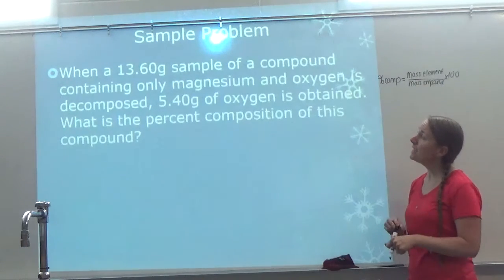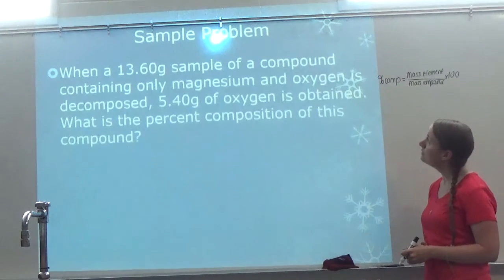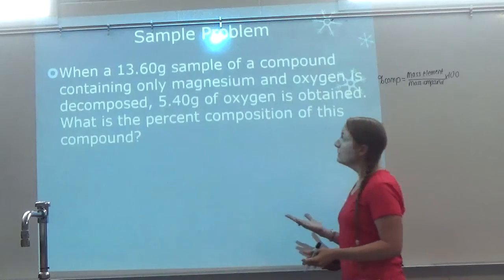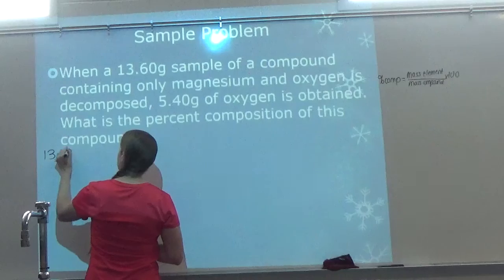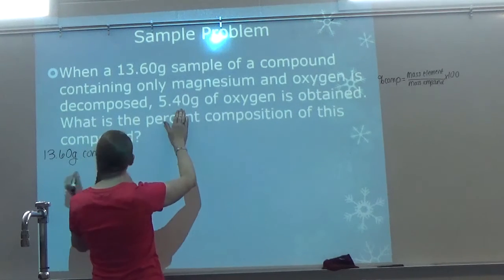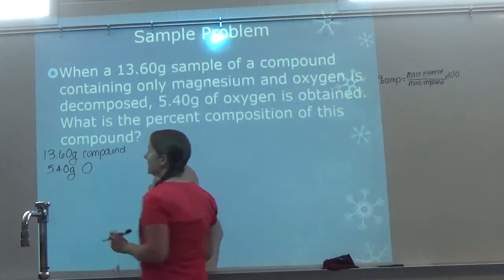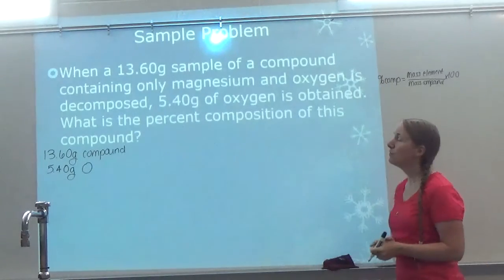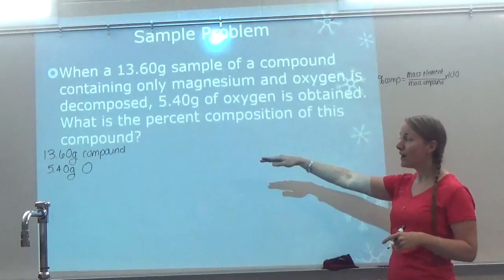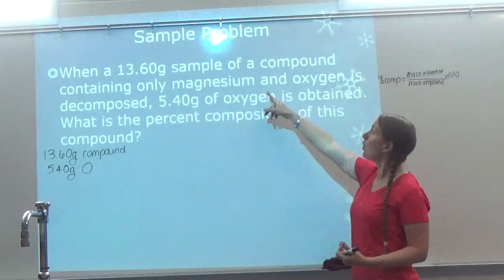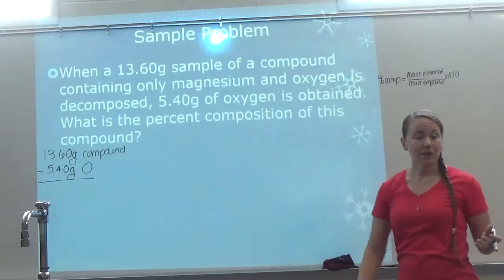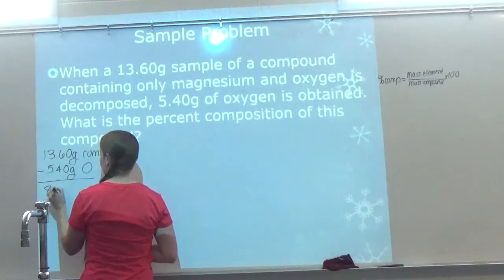When a 13.60 gram sample of a compound containing only magnesium and oxygen is decomposed, 5.40 grams of oxygen is obtained. What is the percent composition of this compound? We have our whole compound — 13.60 grams — and it only contains magnesium and oxygen. When decomposed, 5.40 grams was oxygen. So we're missing magnesium. Before you start, you need to know the mass of the whole compound and the mass of each element. Since we know oxygen, we can just subtract to get the amount of magnesium: 8.2 grams of magnesium.